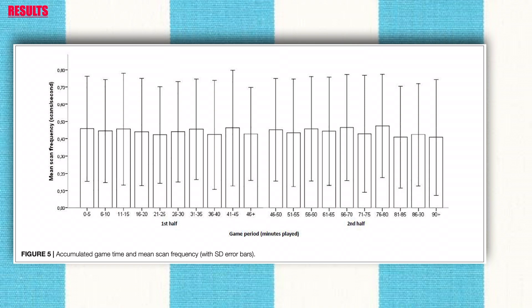When combining game standing and game time, a similar pattern emerged when winning — no differences in the first half but a difference in the second half. For possessions when drawing, there were no differences in either half. However, when losing, there was no difference in the second half but a difference in the first half, where scan frequencies tended to drop toward the end of the half. Post-hoc comparisons showed significant differences between the 45-minute mark and the 5- and 10-minute marks, and between 45 minutes and 31–35 minutes, though these results should be interpreted with caution due to very small sample sizes.